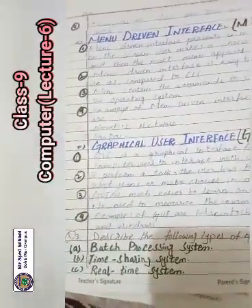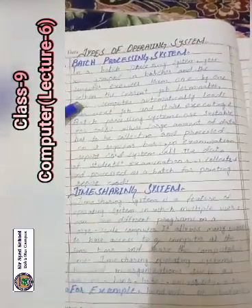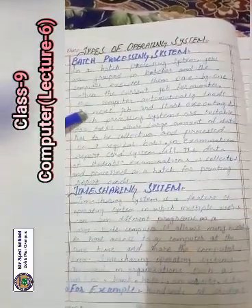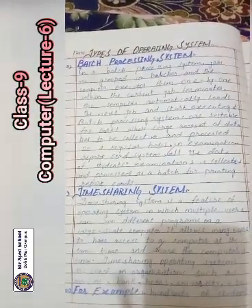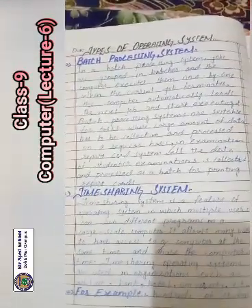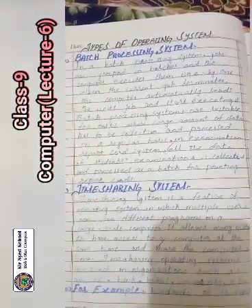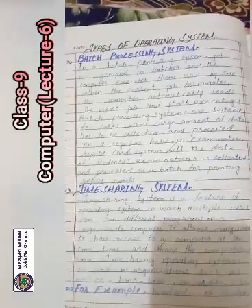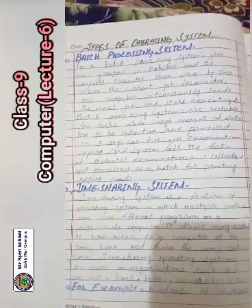Next question: batch processing system, time sharing system, and real-time system. In a batch processing system, jobs are grouped in batches and the computer executes them one by one. When the current job terminates, the computer automatically picks the next job and starts executing it. Batch processing systems are suitable for tasks where large amounts of data have to be collected and processed on a regular basis, such as examination report card systems.